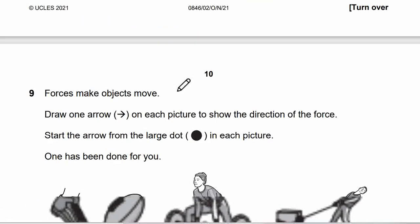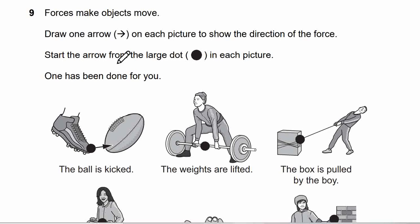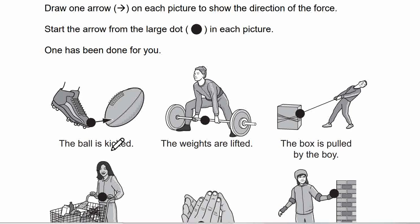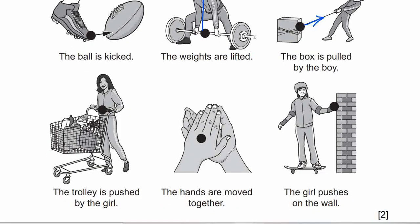Question 9: forces make objects move. Draw one arrow on each picture to show the direction of the force, starting the arrow from the large dot. The ball is kicked — arrow points in the direction of the kick. The weights are lifted — arrow points upward. The box is pulled by the boy — arrow points toward the boy. The trolley is pushed by the girl — arrow in the direction of the push. The hands are moved together — one hand exerts force against the other.